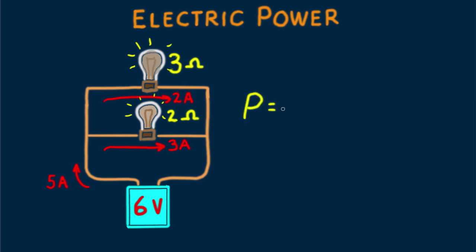And how much power is emitted by the 3 ohm bulb? Power equals 2 amps times 6 volts, and that's 12 watts. We can see that 12 watts is less than the 18 watts of the lower bulb. So the top bulb is dimmer than the bottom bulb.